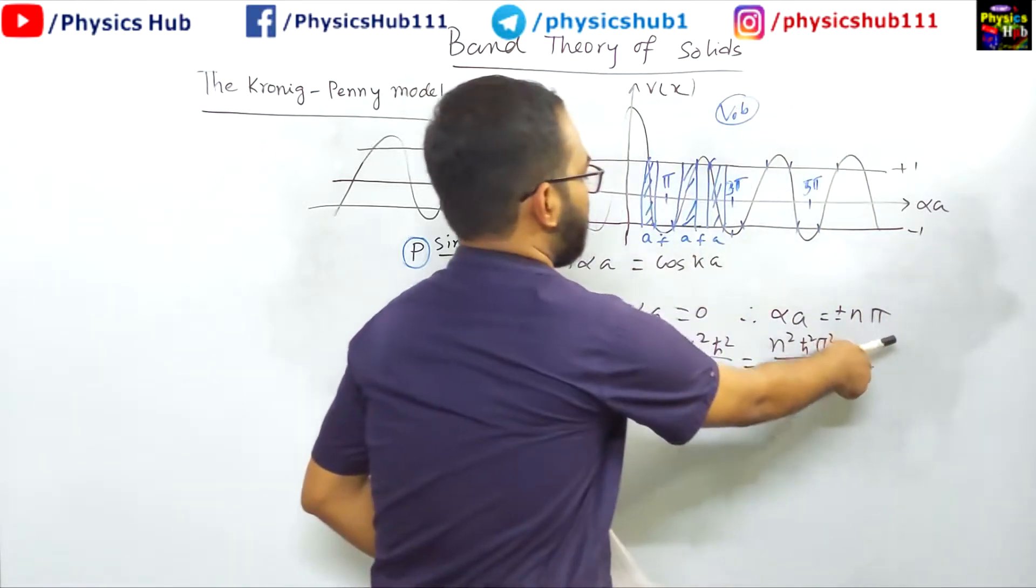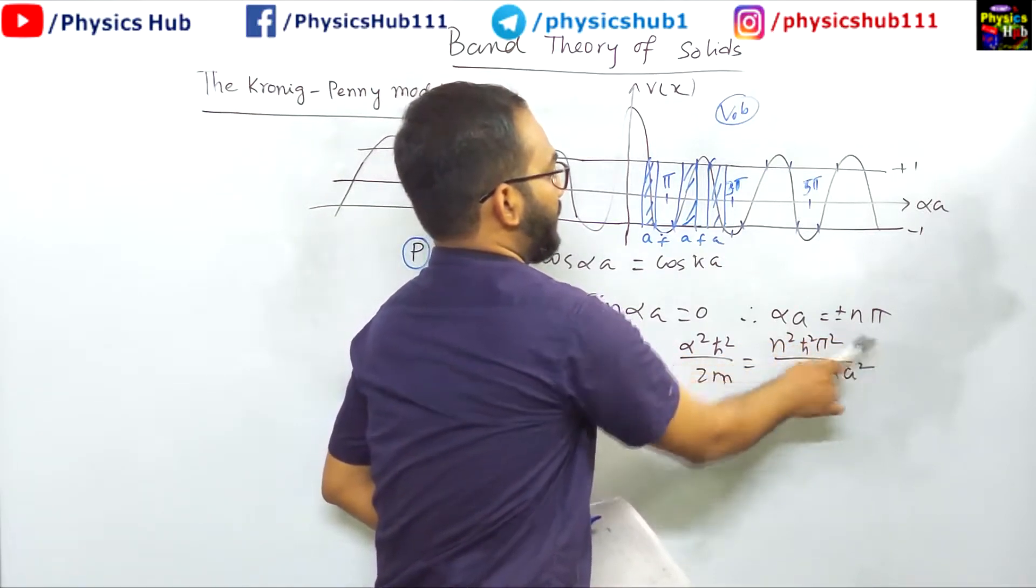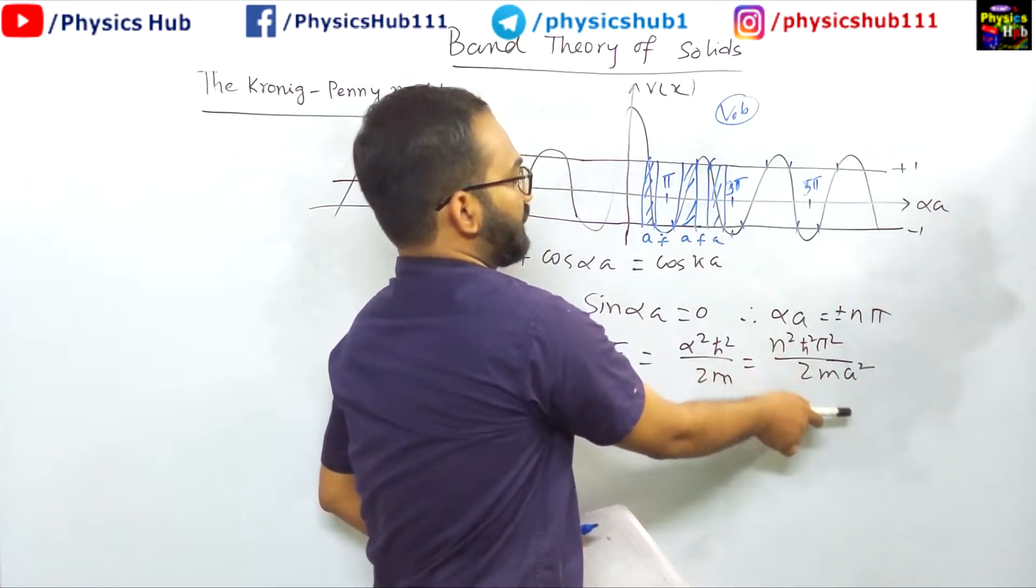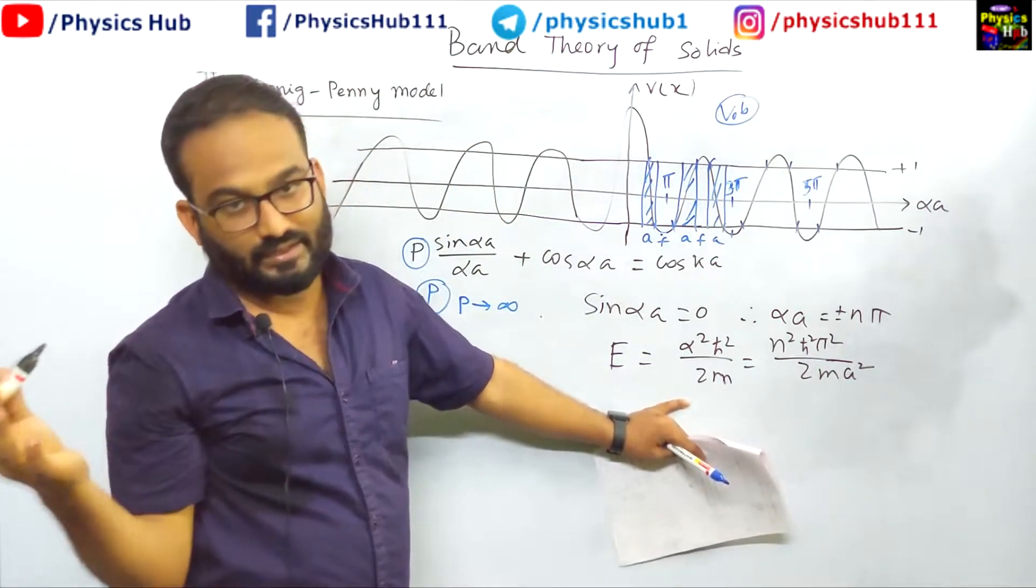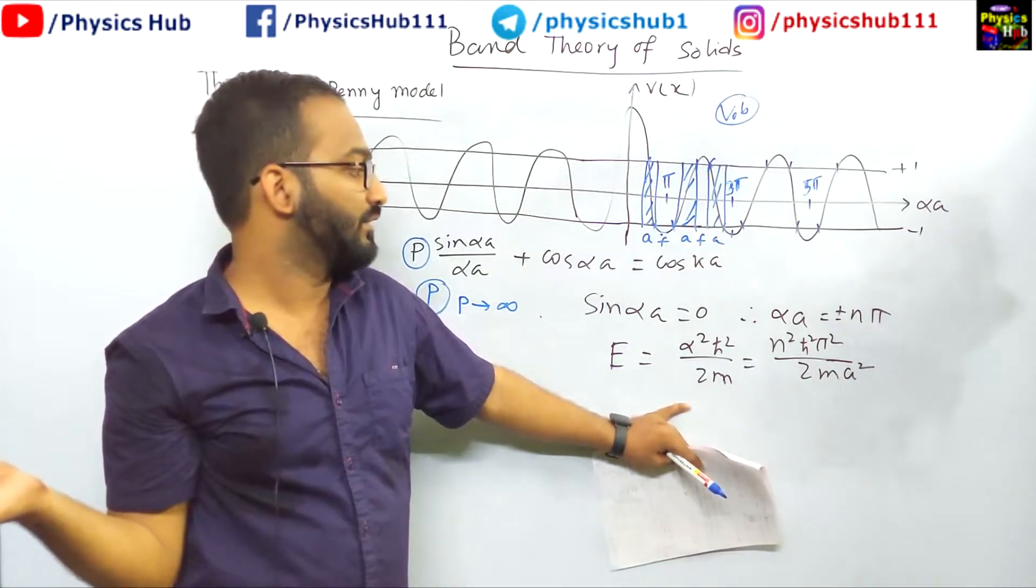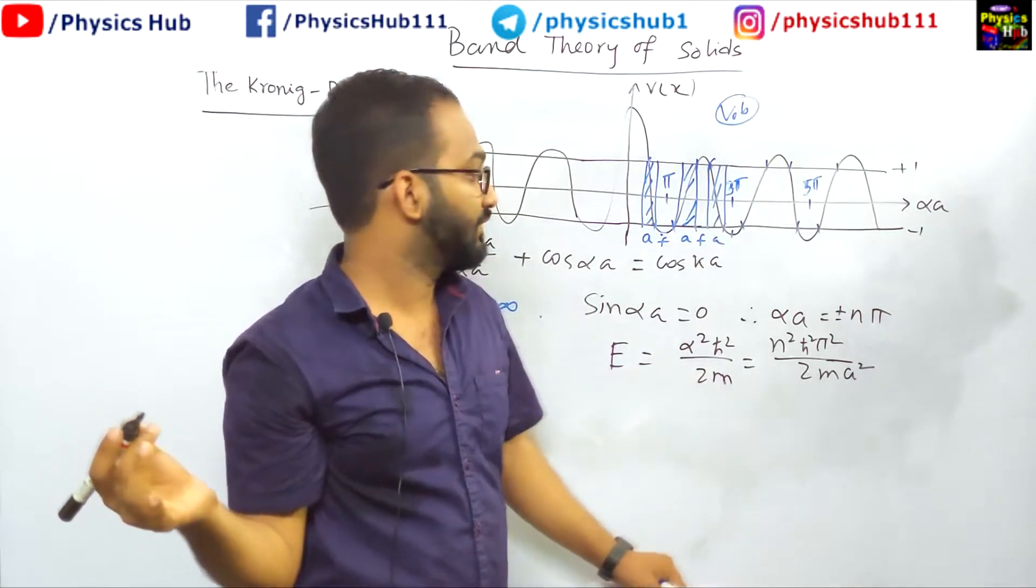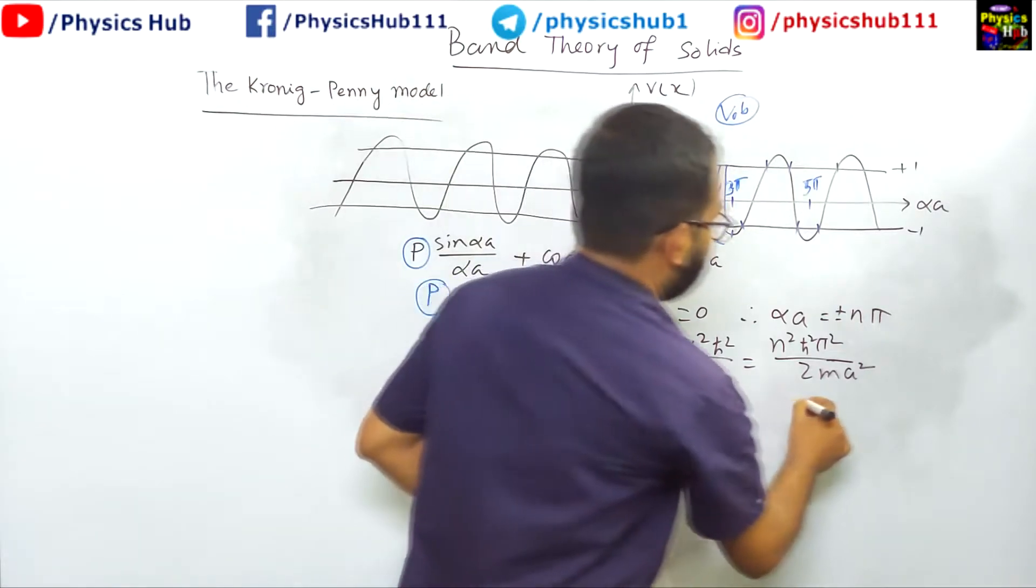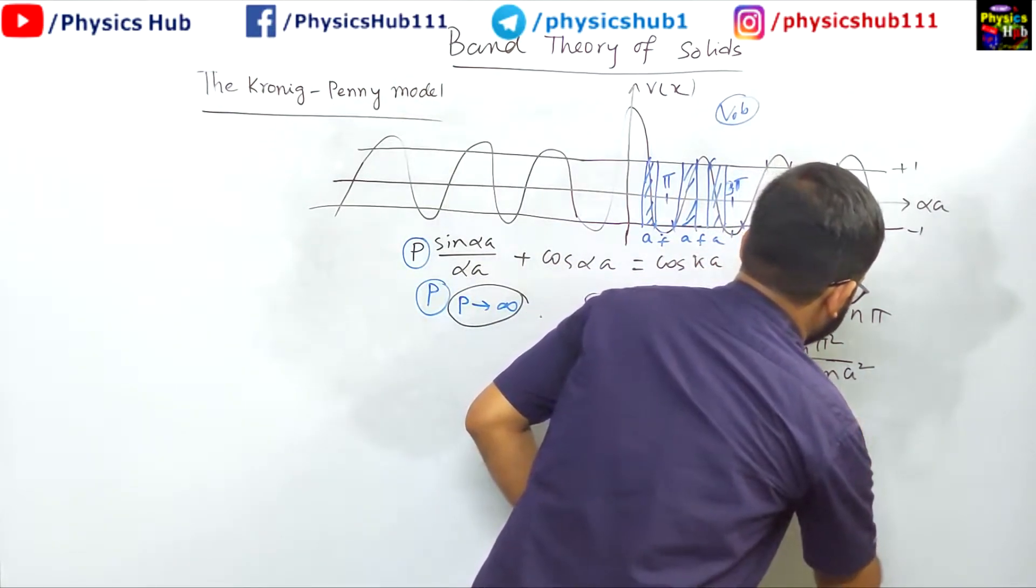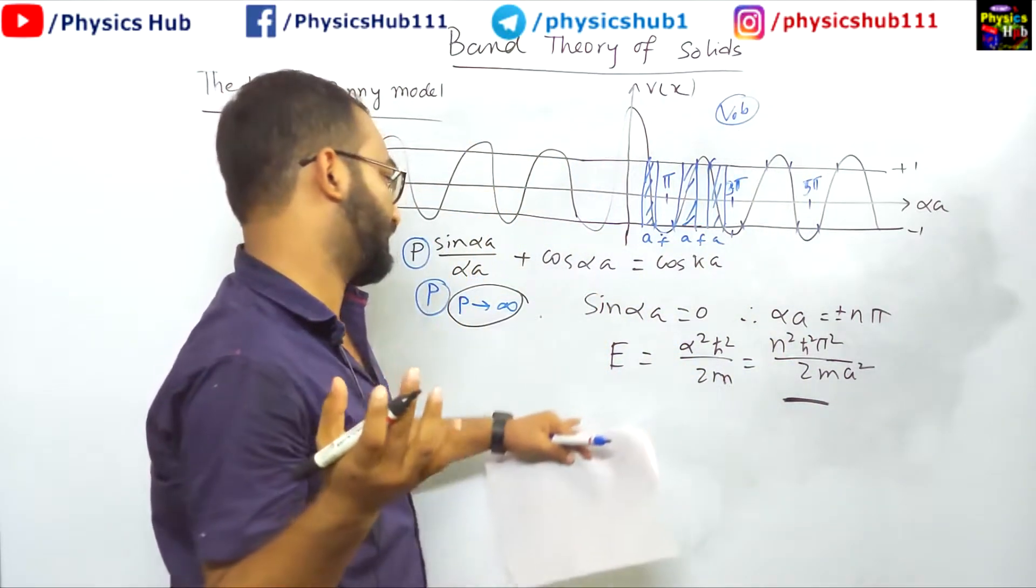And the familiar equation we have got: n²ℏ²... Okay, alpha equals plus or minus nπ/a, so n²π²ℏ²/2ma². This is the standard energy eigenvalue of a particle in a one-dimensional box we have seen. So what does this energy show? The discrete energy. So when you consider the p value to be infinitely high, you get discrete energy instead of band - you get a discrete line, and that should be the case.